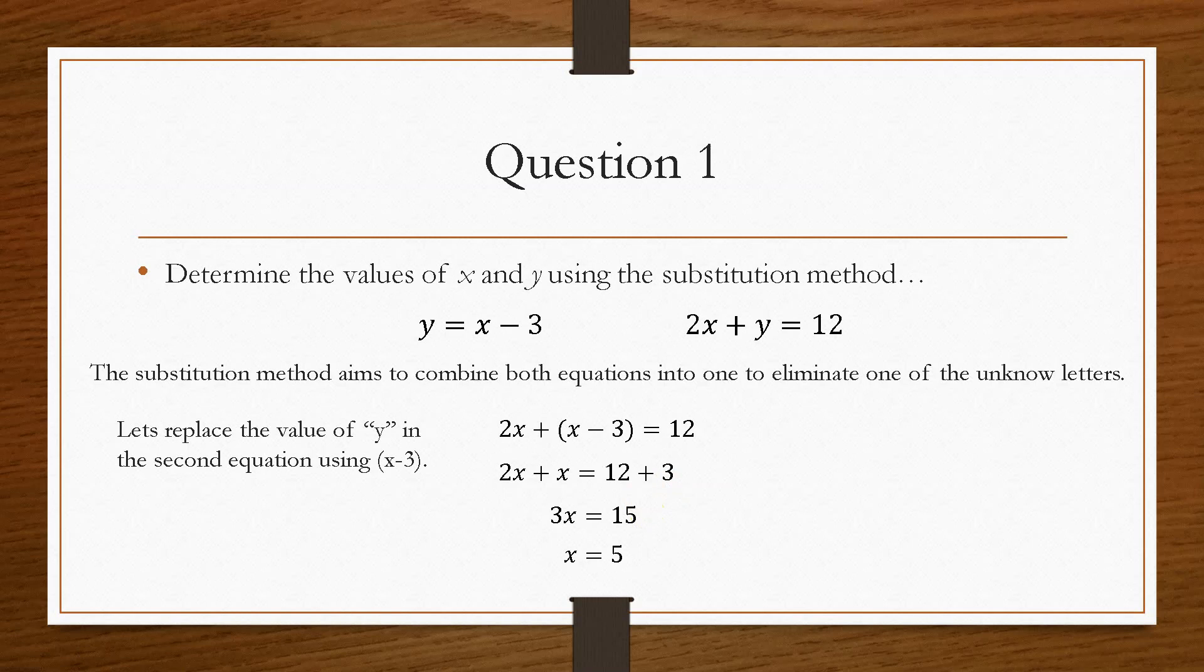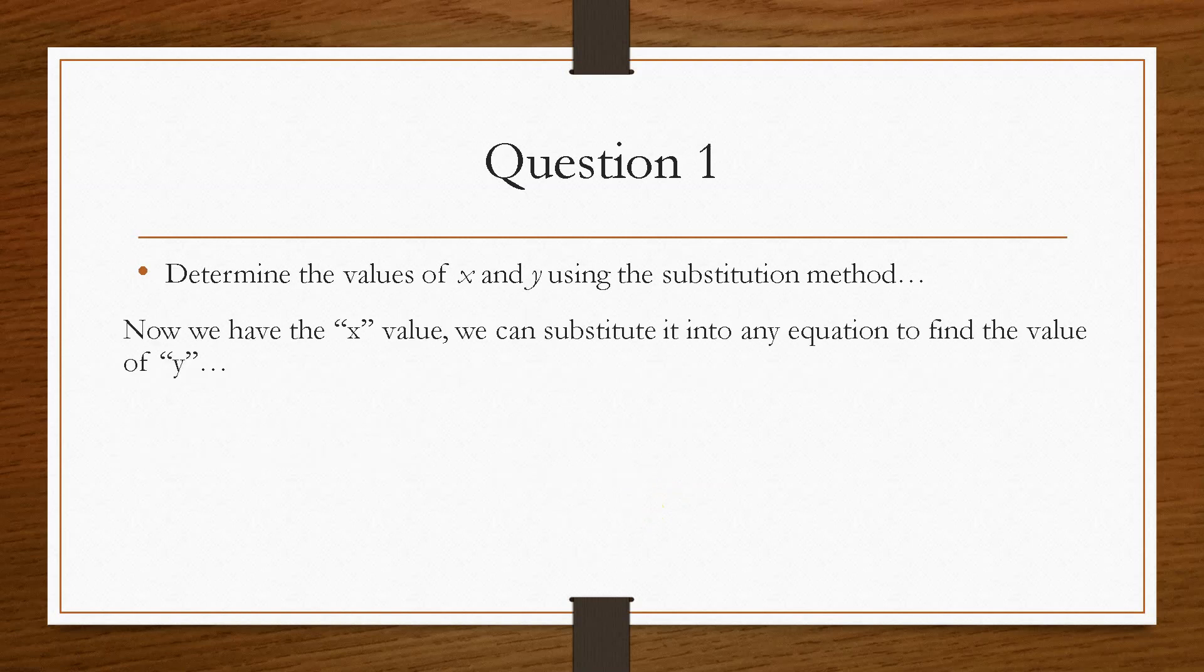Now once you have one value, it is very easy to find the second value. And all we do is we pick any of the two equations. We'll make it easy, and we'll do the y equals x minus 3. We'll substitute in the value of x, and that will give us the corresponding value of y. So we get x equals 5, and y equals 2. Now you can check these. You can plug them into both equations and make sure that you get the same answer.